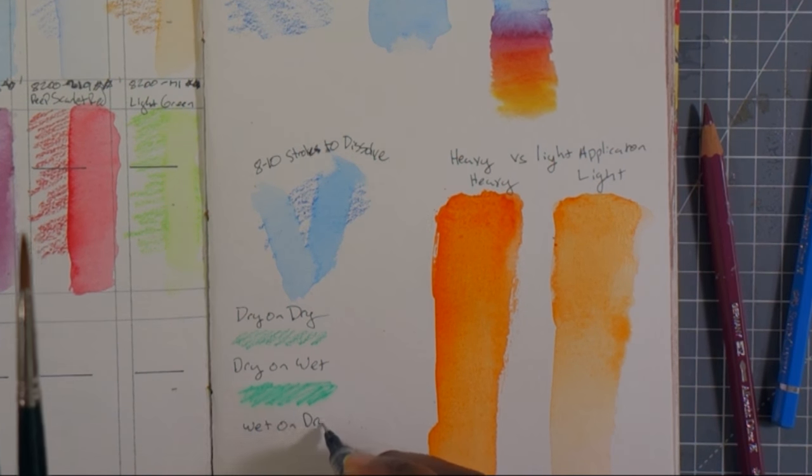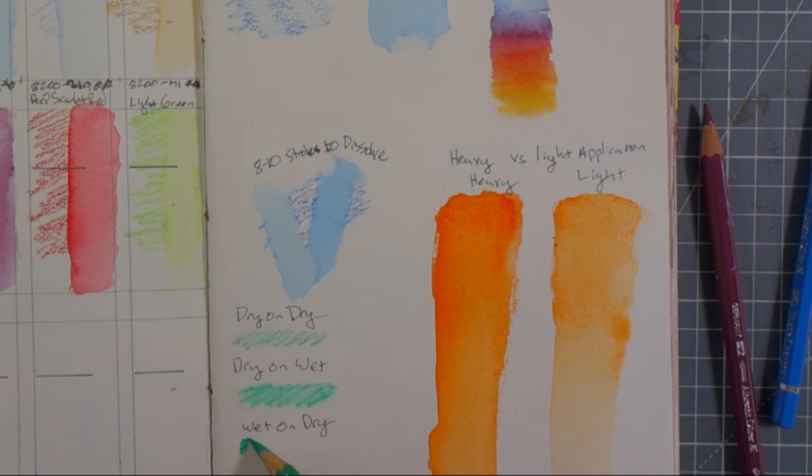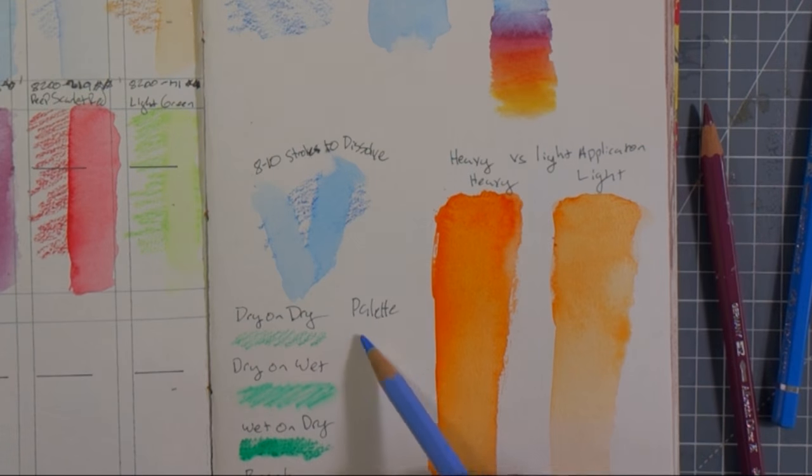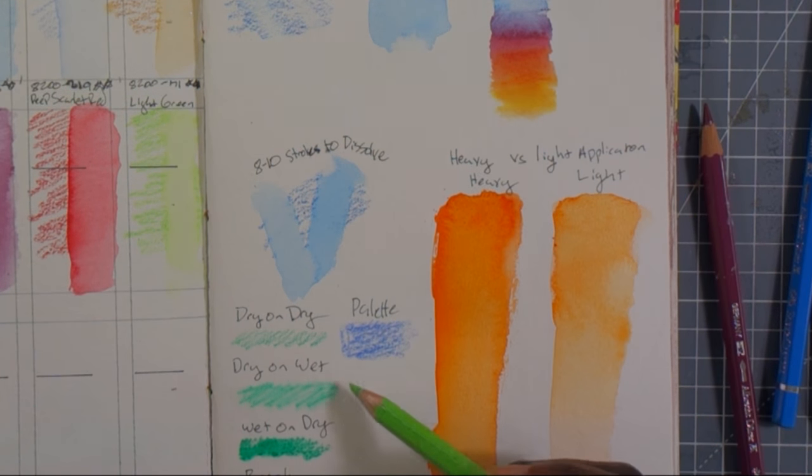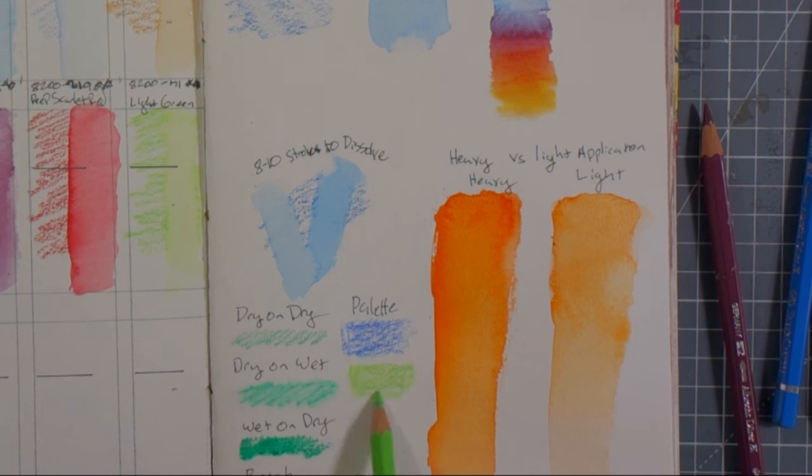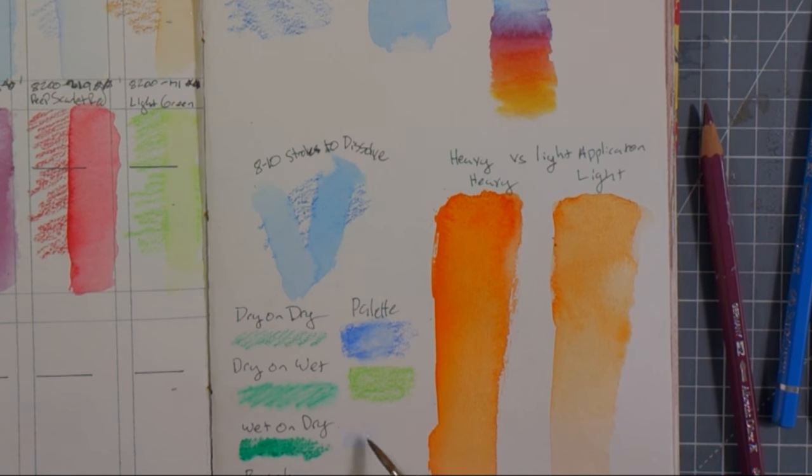Now wet on dry, so a wet pencil on dry paper. This gives a really intense pigmented color. You can also use these pencils as a sort of palette. If you just put down color and then use a brush to transfer it somewhere else. So I'm doing that a bit with blue and green here.